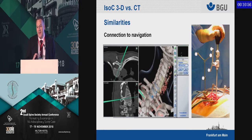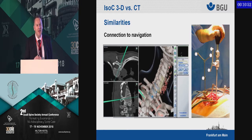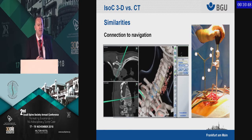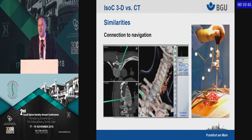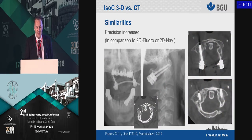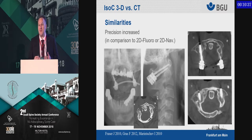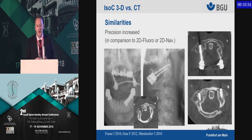Another similarity: it is easy to connect both to navigation. Nowadays these machines do a really easy job — they directly put the data into your navigation system and you can use it immediately. There is no difference between the systems in that regard. With regards to precision, both are much more precise than conventional 2D fluoroscopy or 2D navigation.